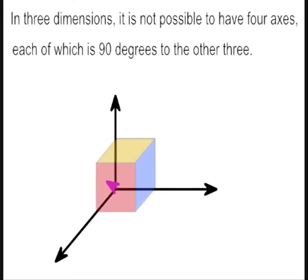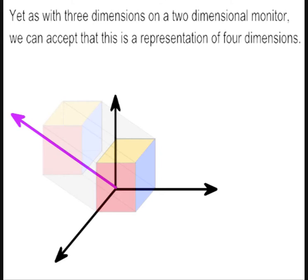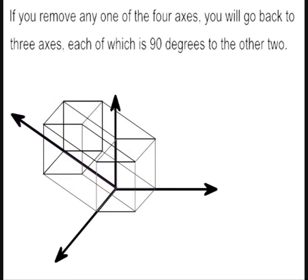In three dimensions, it is not possible to have four axes, each of which is 90 degrees to the other three. Yet as with three dimensions on a two-dimensional monitor, we can accept that this is a representation of four dimensions. If you remove any one of the four axes, you will go back to three axes, each of which is 90 degrees to the other two.